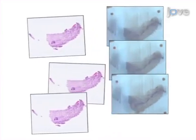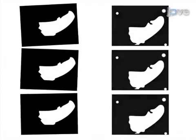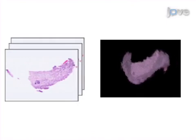Next, optical block face images of the tissue blocks are captured, and the tissue block is sectioned. Images of the sections are captured, and using custom software, each section is aligned with its corresponding block face image to reconstruct the histology volume of the mammary gland.